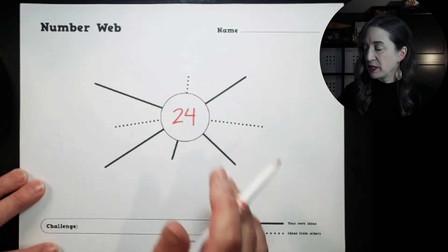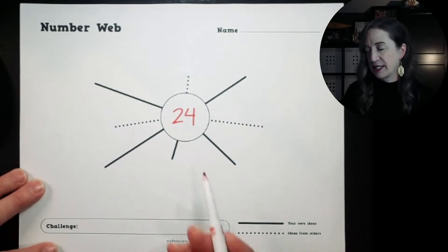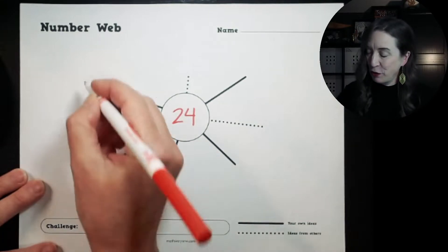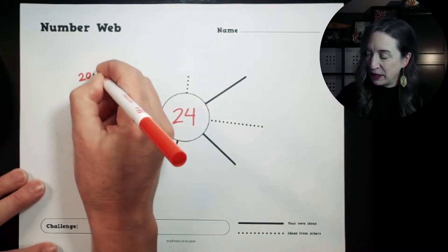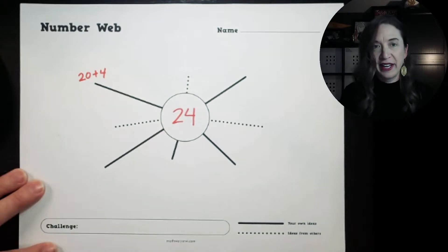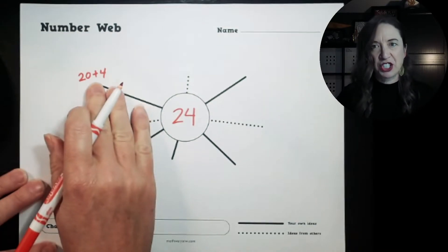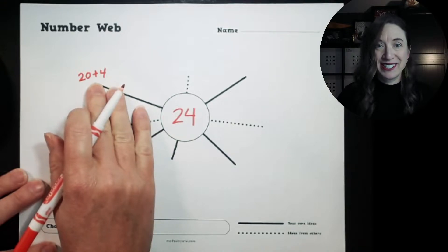So we're going to go ahead and do our own solid lines first. I'm going to start with the good old expanded form: 20 plus 4. And that's all I need to write. I don't need an equal sign. This is just an expression, which means another way to say 24.